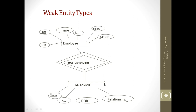To determine the primary key of the weak entity set, it will be 'employee number' and 'name' — both put together will give the primary key of the weak entity set.